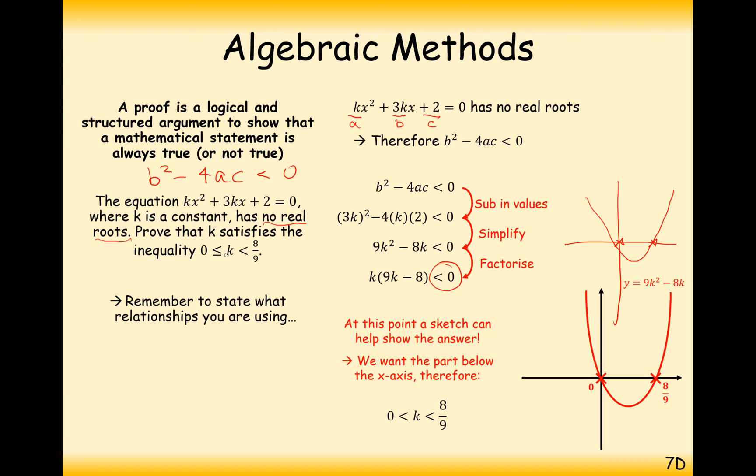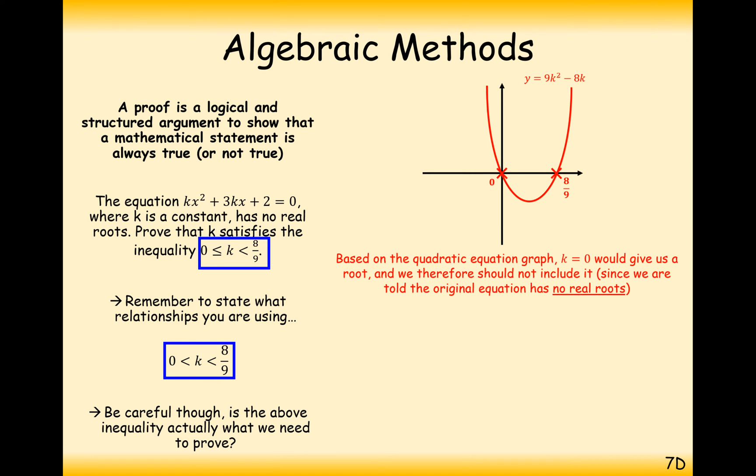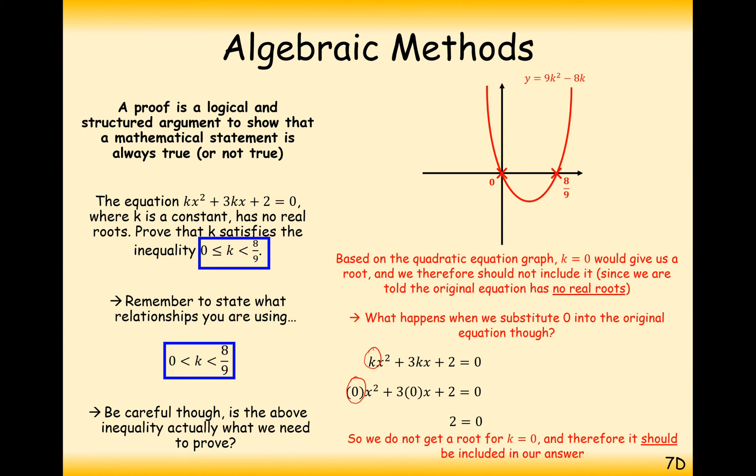Now we need here an equality on the 0 here. So what do we need to do when k equals 0? So based on our quadratic graph, when k equals 0, it gives us a root. So we should therefore not include it since we are in the original equation not real roots. But what happens if we substitute in k is 0 though? We're going to get 2 is 0. So you can see here that when the k is 0, the coefficient on the x squared is 0, and then none of this else makes sense. So we can here also include 0 in our answer. So just be really careful when you're doing these types of questions that you have a look at the equalities on these equations here.